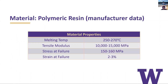We'd like to give you some basic background information on the material in question. Unfortunately, since the material and product are proprietary, we can't give specific numbers, but rather rough ranges for values. As you can see in the data table, the polymer has a melting temperature of 250 to 270 degrees C, a tensile modulus between 10 and 15,000 megapascals, a stress at failure of 150 to 160 megapascals, and a max strain of two to three percent.